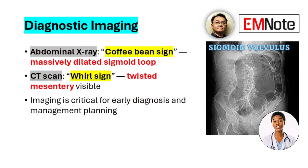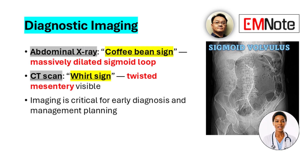Diagnosis relies on imaging. Abdominal x-rays may show a dilated sigmoid loop — the coffee bean sign — while CT scans confirm the whirl sign, indicating the twisted mesentery.